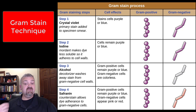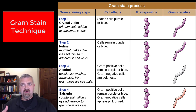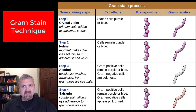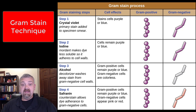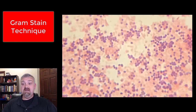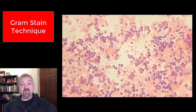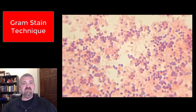The last step is called a counter stain. It's safranin, which is a red stain, and it's going to stain everything red, whether you're gram positive or gram negative. But you can't stain purple red — so the gram positive cells stay purple. The gram negative cells that were made colorless in the decolorizer step will now stain red or pink. Looking at an image here, we see a mixture of both gram positive and gram negative cells. The gram positive cells stain purple and the gram negative cells stain pink — some would say red, but usually it's pretty light.